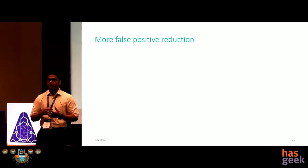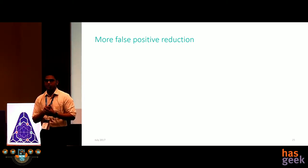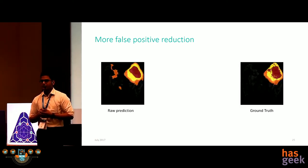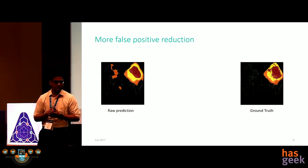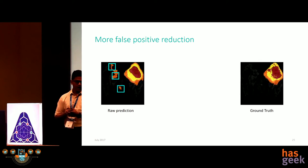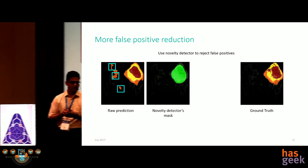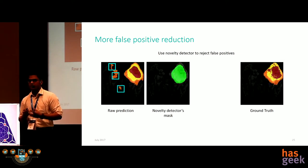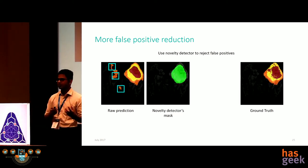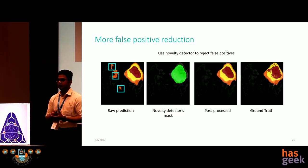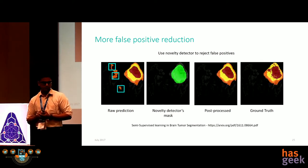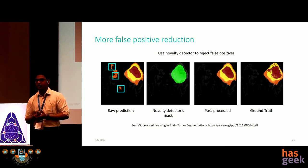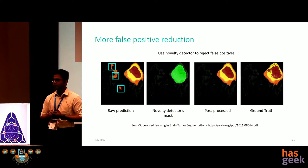We thought this novelty detector is really good — can we fuse it with the classification MLP trained in the first steps? The MLP prediction has some false positives, which can be removed using the novelty detector's mask. We multiply the mask and retain the connected component particular to the cancer. The post-processed image is almost as good as the ground truth. This work has been published — you can follow the link on this slide for more details on the training methodologies.